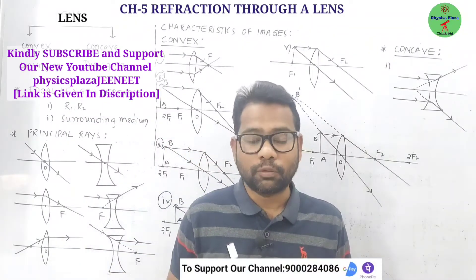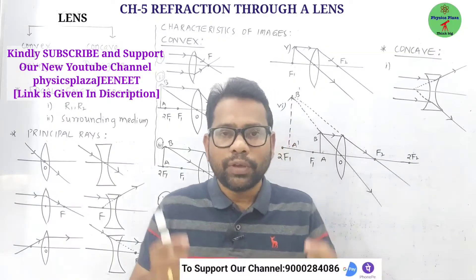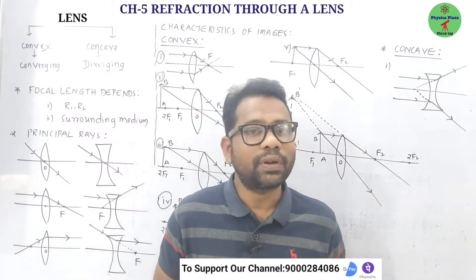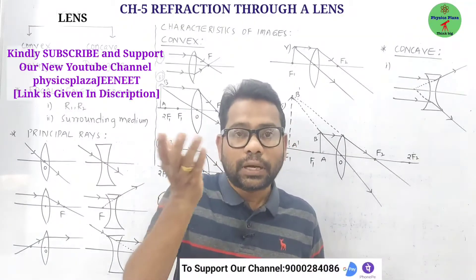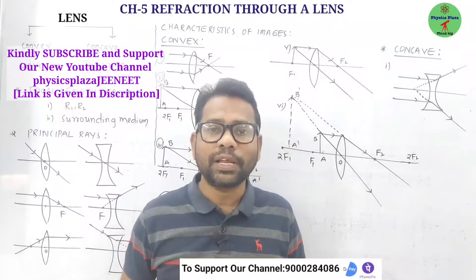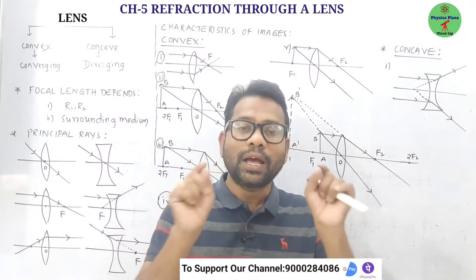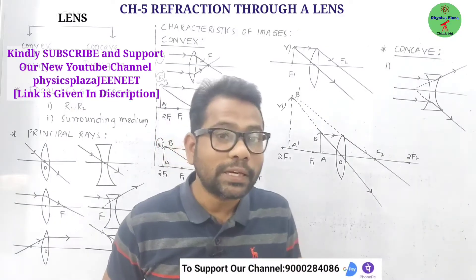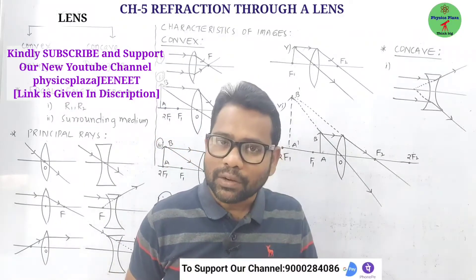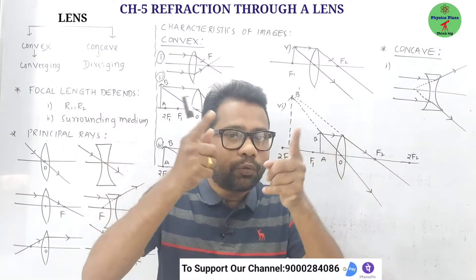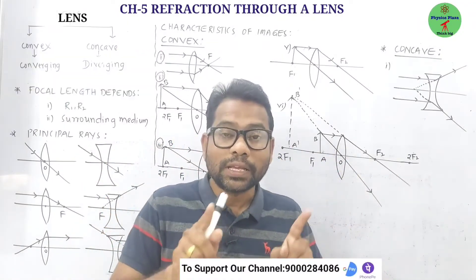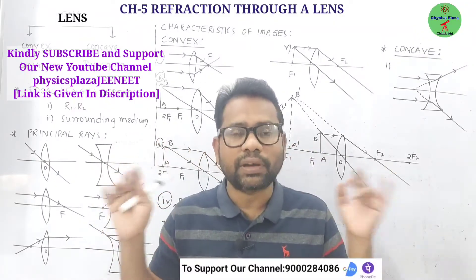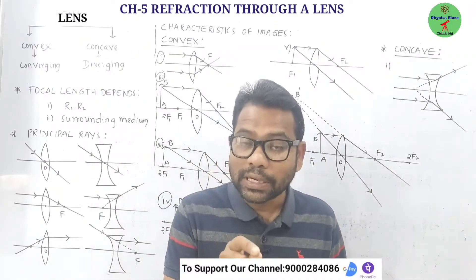Before discussing ray diagrams we need to recall the terms related to the lens. The curved surfaces of a lens are part of a hollow sphere. The center of that hollow sphere of which the curved surface is a part is called the center of curvature. In general, a lens has two centers of curvature.